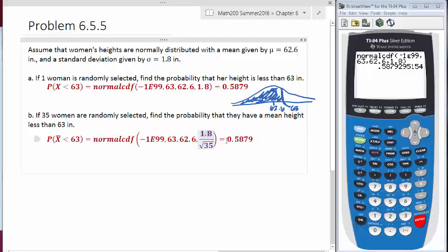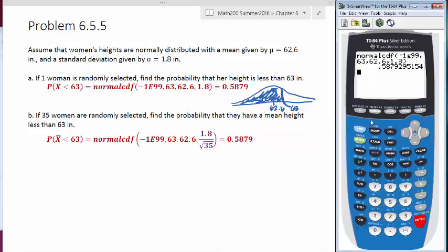So we're dividing this by the square root of 35, and so our answer is probably going to be different. So let's see how that's going to change. Back to our calculators. We have our last command. It's going to be almost exactly the same, except we're going to take the square root of 35 and divide, or we're going to take 1.8 and divide it by the square root of 35.